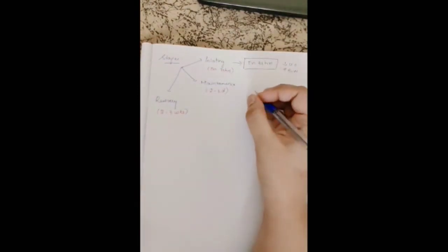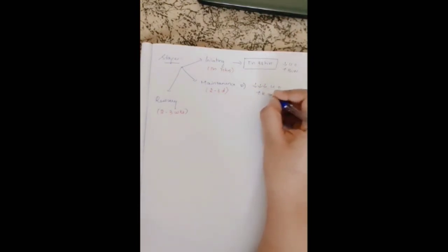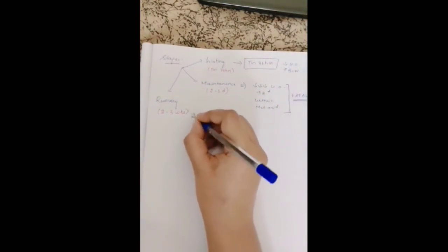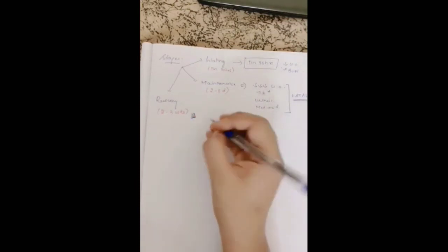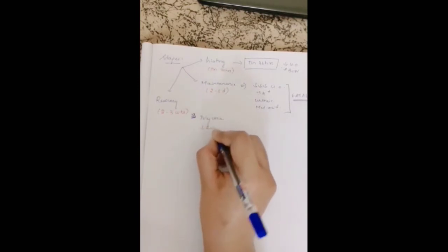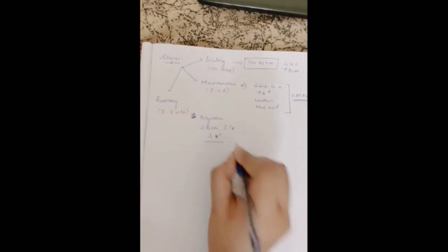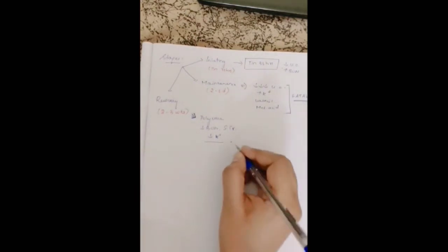In the maintenance phase there will be a marked decrease in urine output, often anuria, increased potassium, uremic features, and metabolic acidosis. This stage is very fatal if left untreated. The recovery phase follows treatment given during the maintenance phase, and in this phase there will be polyuria along with decreasing blood urea nitrogen, serum creatinine, and potassium levels.